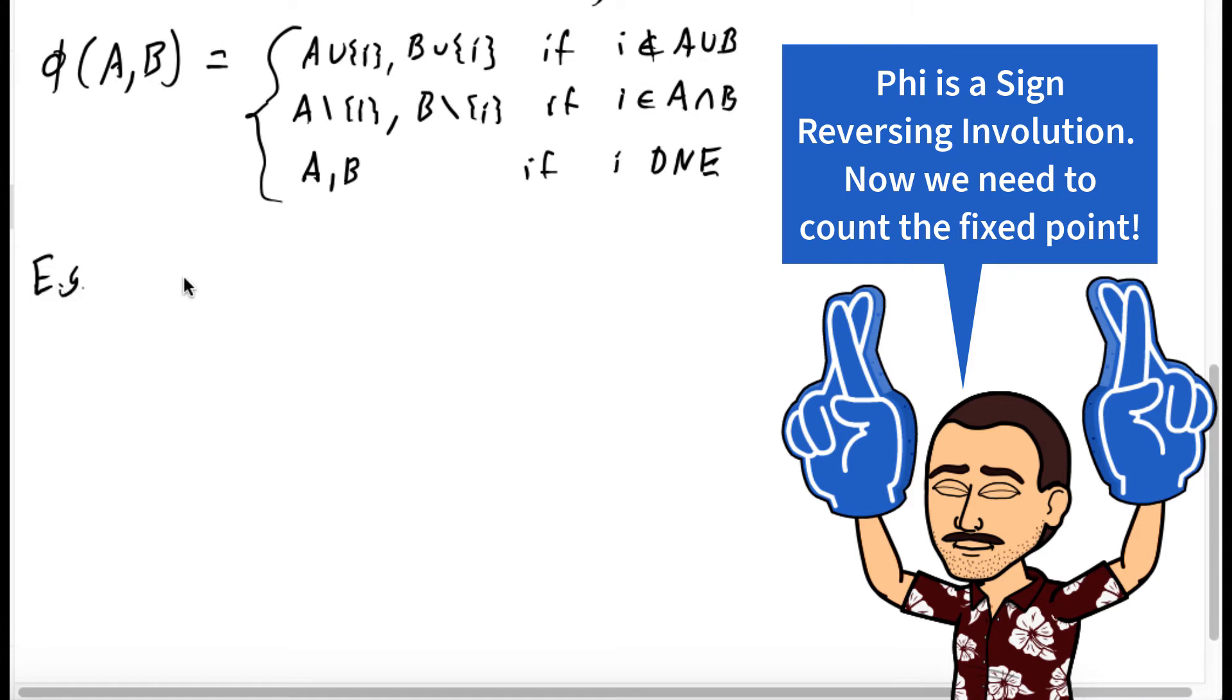For clarity, phi of 1, 4, 5, 2, 3, 4. We found that i was equal to 4. So what does phi do? It removes i from both sets. So what we'd get is 1, 5, 2, 3. Notice the sets used to have 3 elements. Now they have 2 elements. If they added i, it would change it from 3 to 4. So notice it changes the size of the sets by exactly 1.